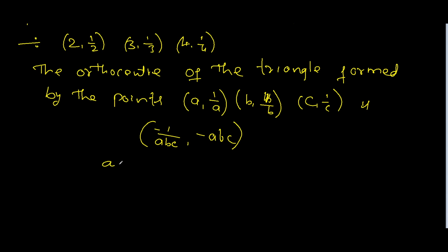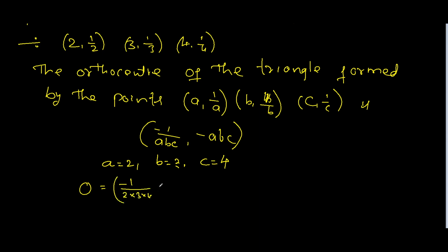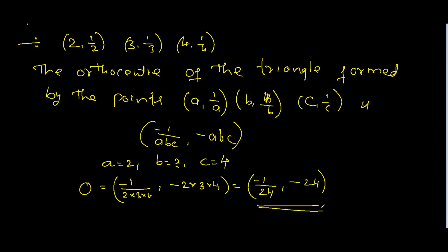Here A = 2, B = 3, and C = 4. Substituting into the formula, the orthocentre is equal to minus 1/(2 into 3 into 4) comma minus (2 into 3 into 4). That is equal to minus 1/24 comma minus 24. This is the orthocentre of the triangle for the given points.